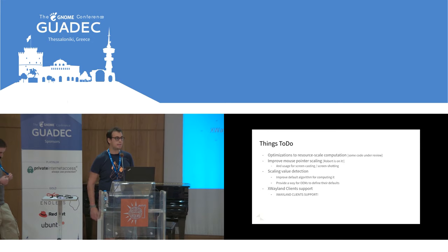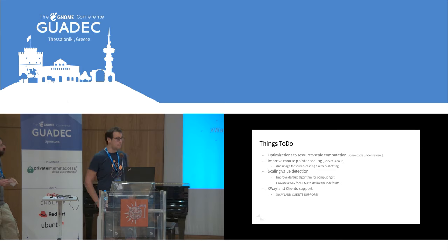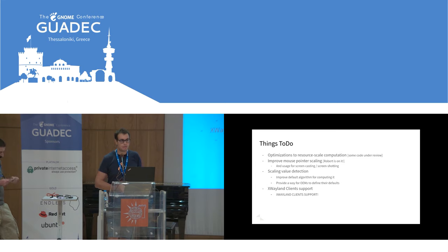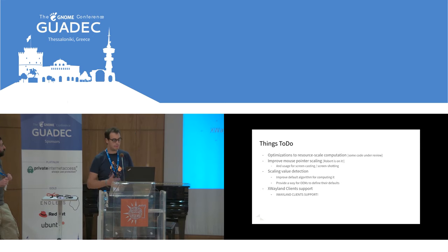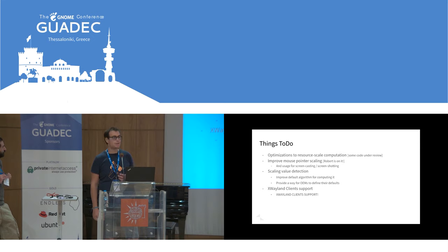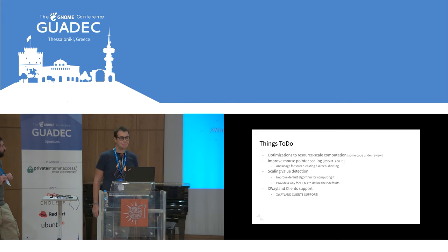The mouse pointer scaling has to be improved to use more hardware pointers when possible, and Robert is helping with that. One thing is also improving the detection of the scaling value and the automatic value to use for each monitor — it would be nice to have an API that OEMs can use to tell Mutter how a particular laptop should be fractionally scaled. The most important work item is X11 clients, which need a lot of love — so far they are just stretched and blurry. There are various ideas how to implement this, and we need to get our hands dirty and deliver it.